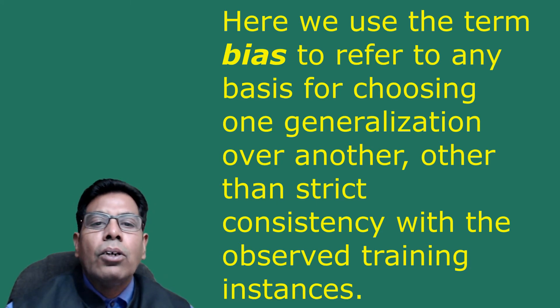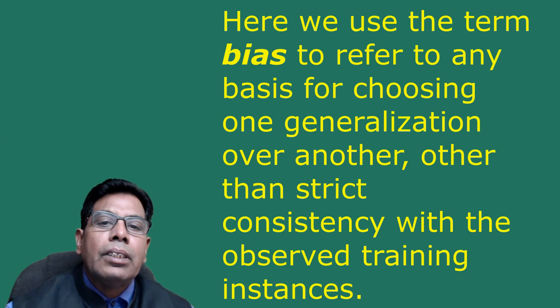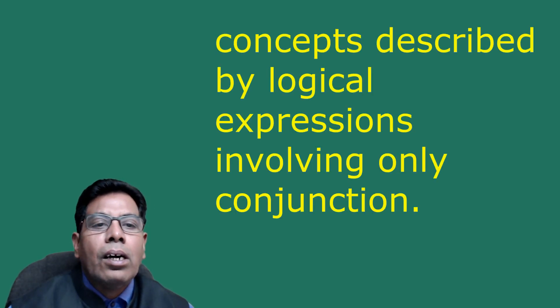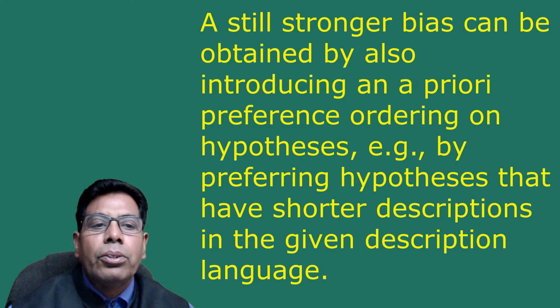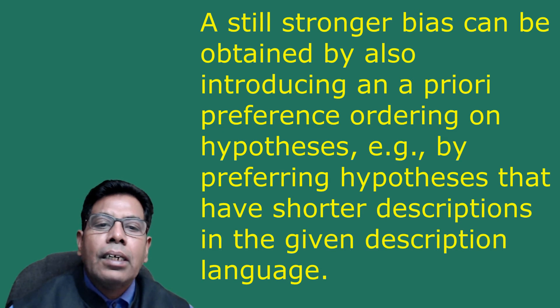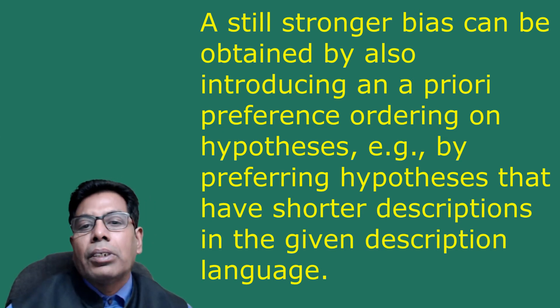We use the term bias to refer to any basis for choosing one generalization over another other than strict consistency with the observed training data. The most relevant form of inductive bias is the restriction of the hypothesis space to only concepts that can be expressed in some limited concept description language — for example, concepts described by logical expressions involving only conjunctions. A still stronger bias can be obtained by also introducing a priori preference ordering of hypotheses, for example by preferring hypotheses that have shorter descriptions.